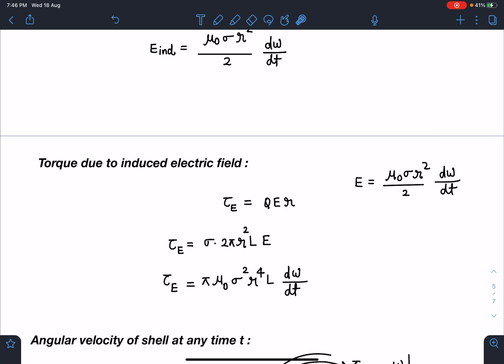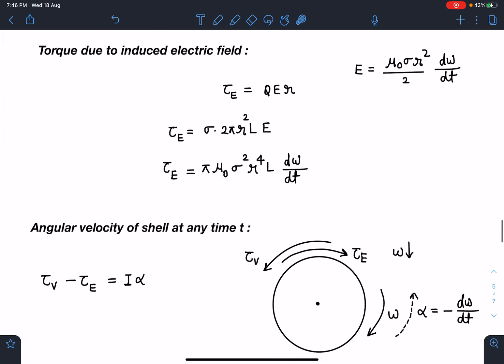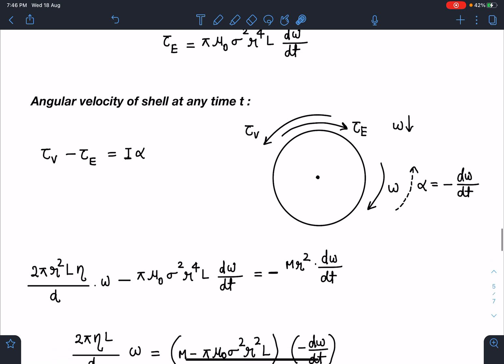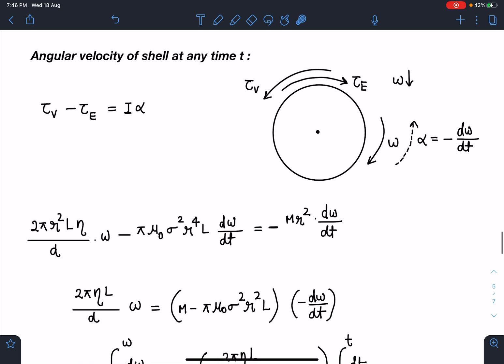The next step is to get angular velocity of the shell at any time t. This is another mains level problem, but together you can see viscosity was there, then magnetic field has come into picture, now the concepts of rotation are also coming in. For angular velocity of shell at any time t, this is going to be the omega and it is decreasing, so α is the other side.